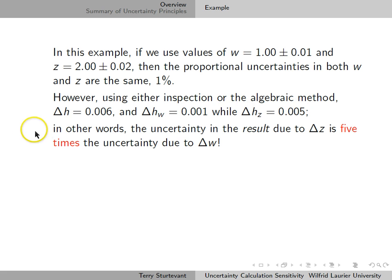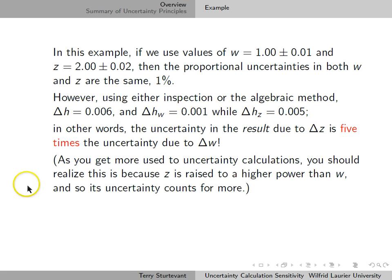In other words, the uncertainty in the result due to delta z is five times the uncertainty due to delta w.